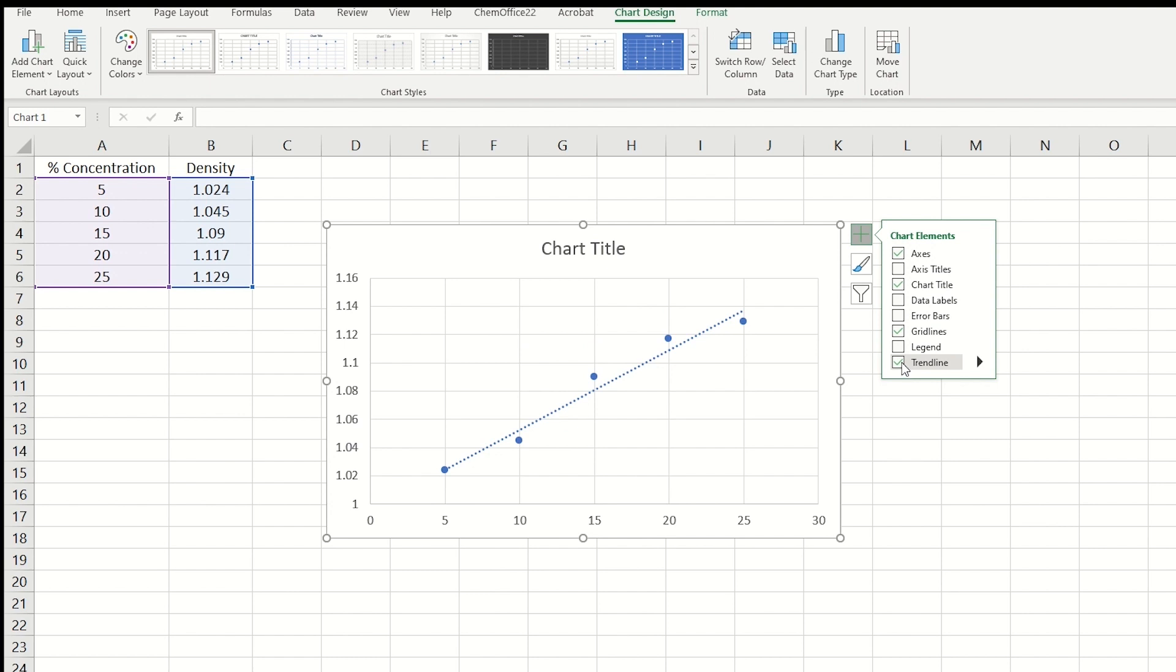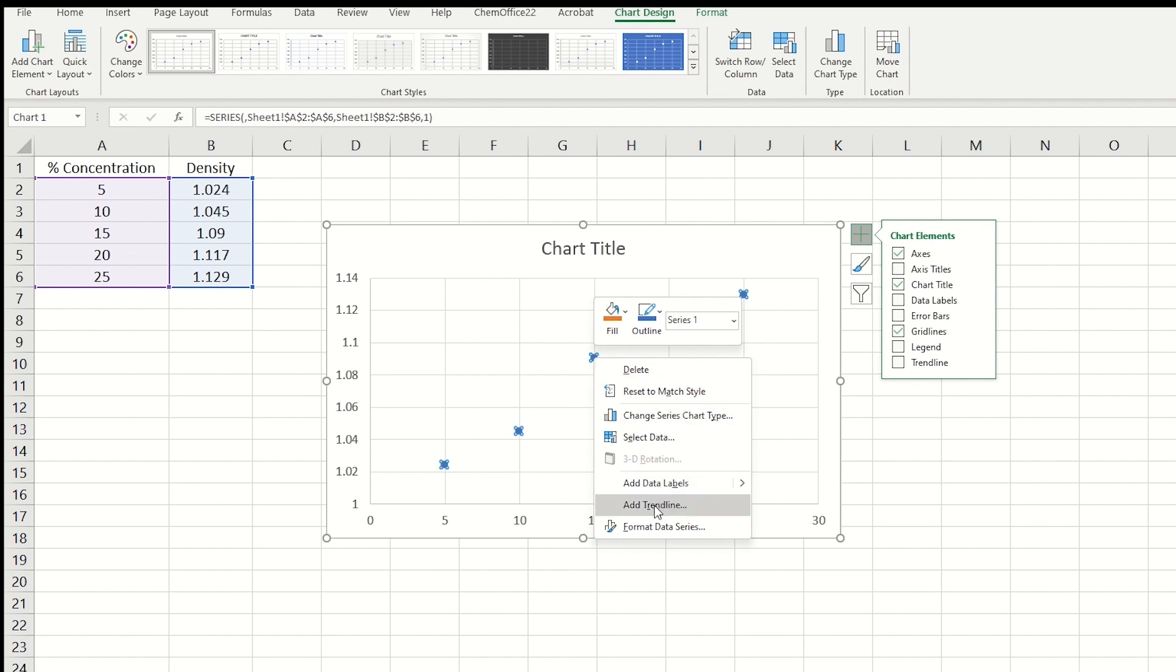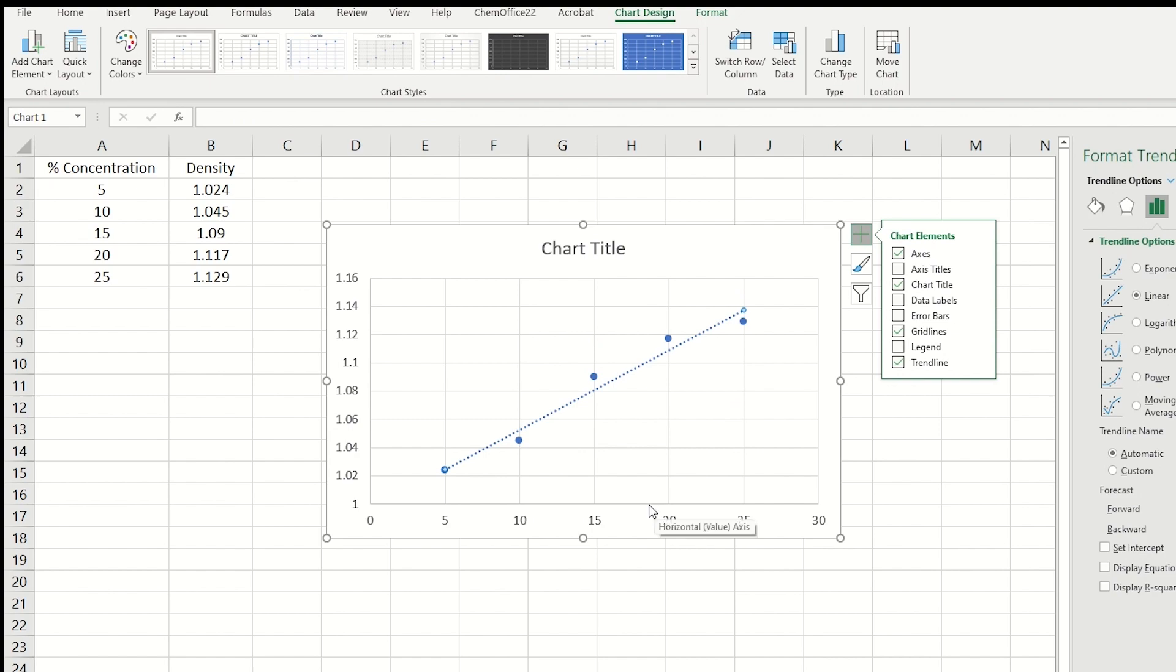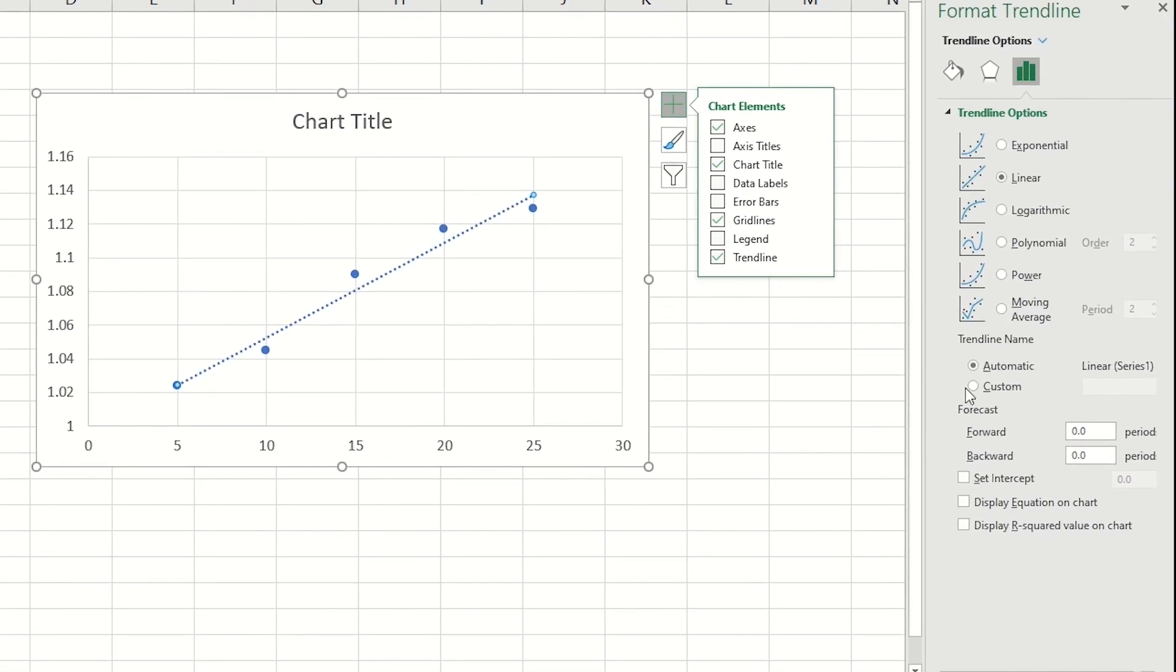I'll uncheck the box, and I want to show you another way to add the trendline. I'll right-click one of the data points and click Add Trendline. You'll notice the option box appears on the right. You have the option to fit different types of lines, but Linear works best for us. Toward the bottom, you'll see an option to display equation on chart. Click this box.